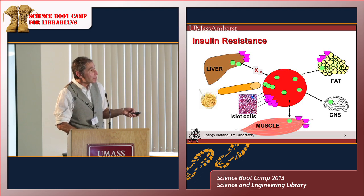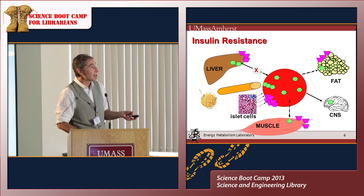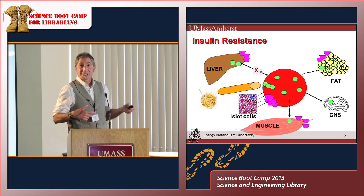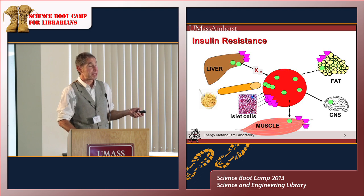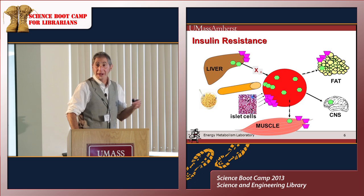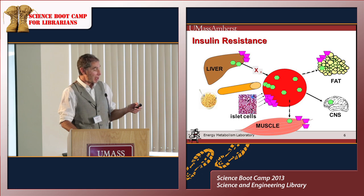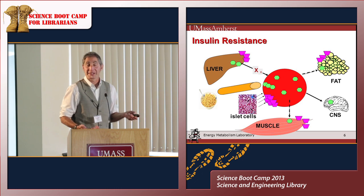Your blood sugar goes up, and in response, the pancreas produces insulin — a purple rhomboid. That insulin binds to receptors on the liver, muscle, and fat. What's supposed to happen is glucose is taken up from the blood into fat cells and stored, taken up into muscle cells and stored, and the liver shuts off. But as people become more obese and insulin resistant, that doesn't work well — there's little uptake into fat or muscle, the liver doesn't turn off, and blood sugar rises.